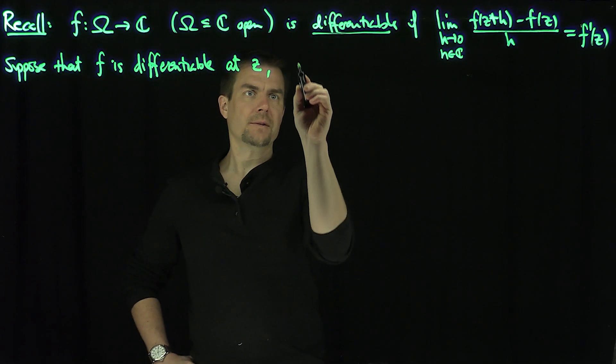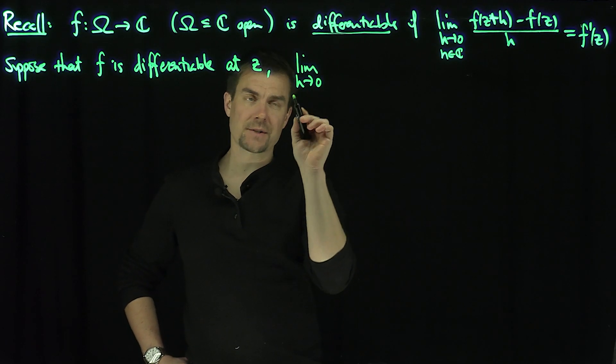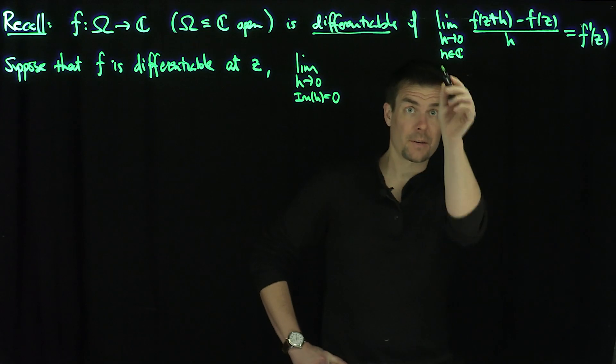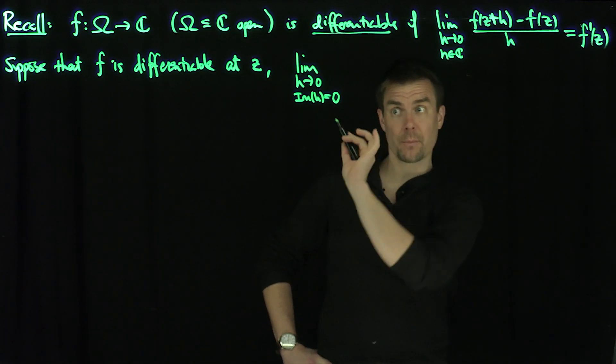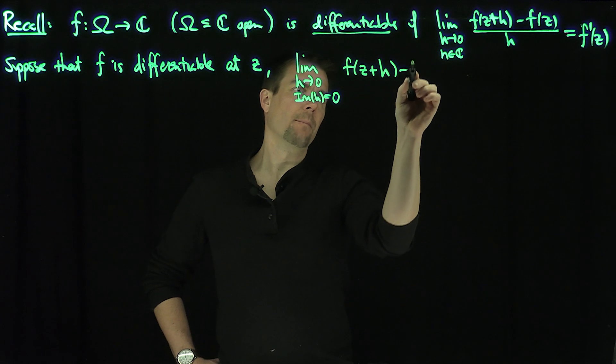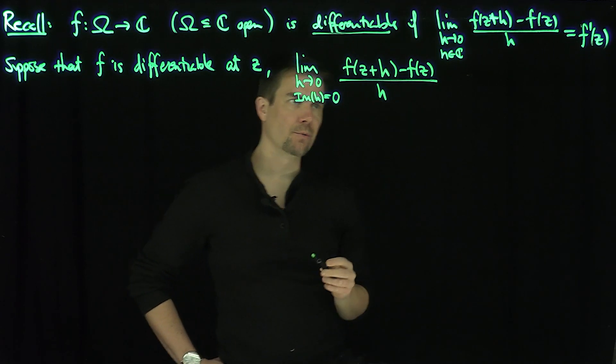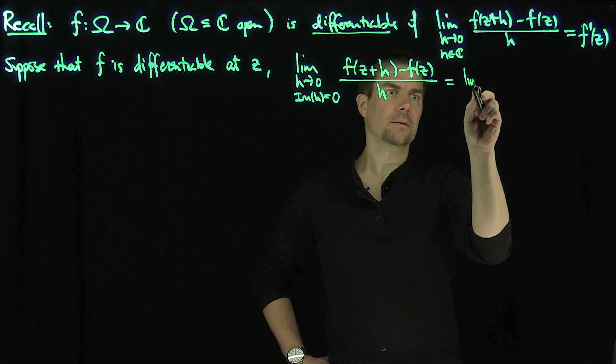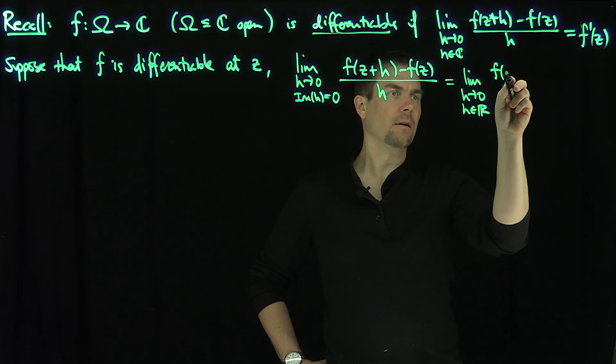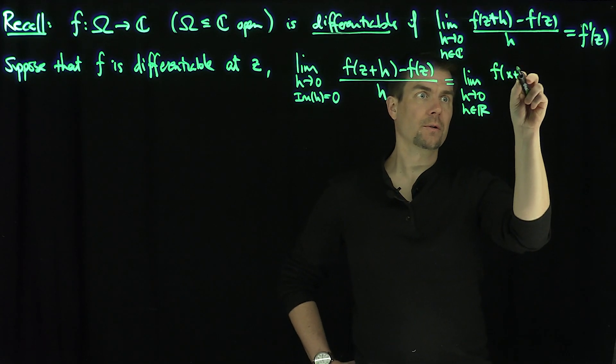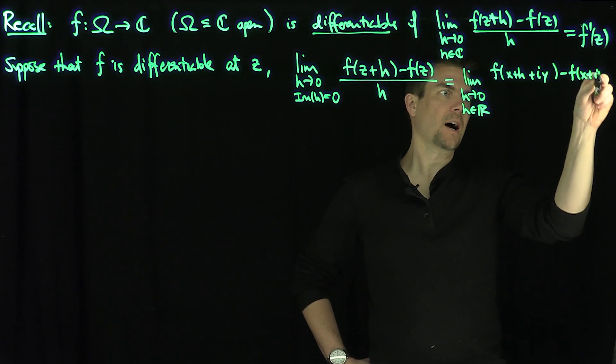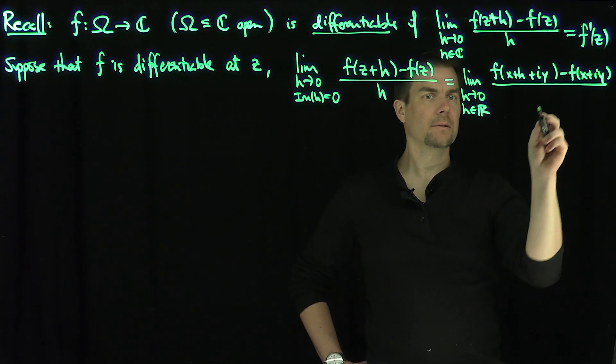Then the limit as h goes to 0, with the imaginary part of h equal to 0, so h is purely real, is: lim(h→0,h∈ℝ) [f(z+h) - f(z)]/h = lim(h→0,h∈ℝ) [f(x+h+iy) - f(x+iy)]/h.